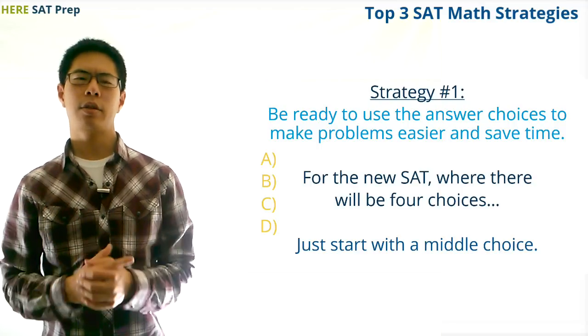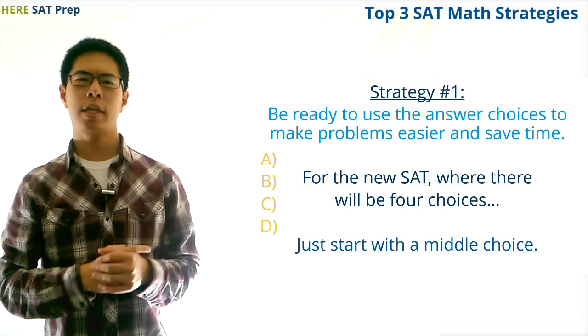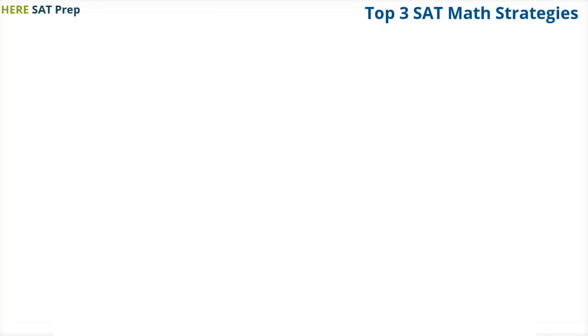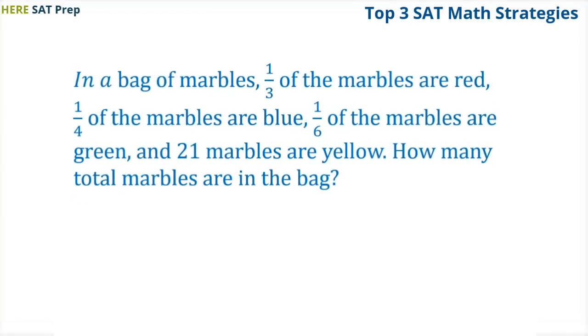Now, let's try two examples where using the answer choices is a better strategy than doing the questions the right way. First, let's take a look at this question. In a bag of marbles, one-third of the marbles are red, one-fourth of the marbles are blue, one-sixth of the marbles are green, and twenty-one marbles are yellow. How many total marbles are in the bag? Our choices are forty-eight, sixty, seventy-two, eighty-four, and ninety-six. Like with the last question, we can figure out pretty quickly that this question will take a while to set up and solve, and then using the answer choices will probably be quicker and easier. So here's how we could use the answer choices.